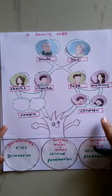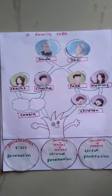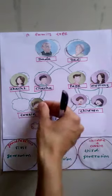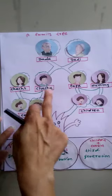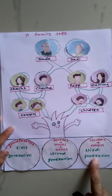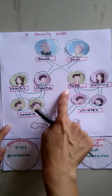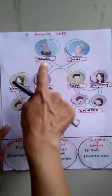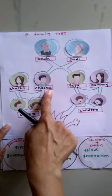Children — that means siblings — and cousins, which means the children of your Cha-cha and Cha-chi, form the third generation of a family tree. Papa means son of your Dada and Dadi, and Cha-cha also means son of your Dada and Dadi.